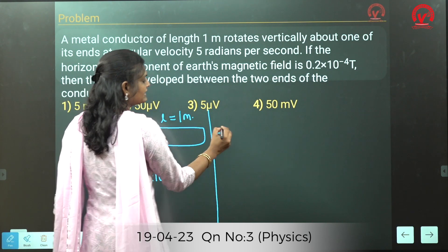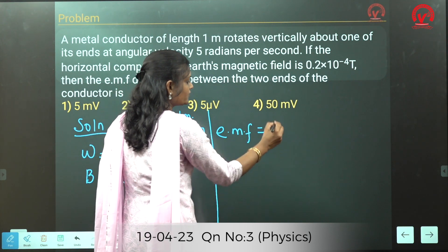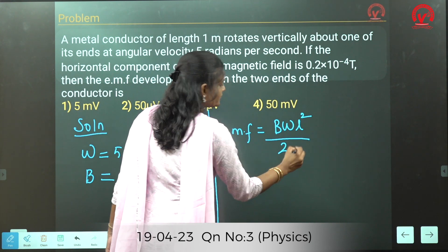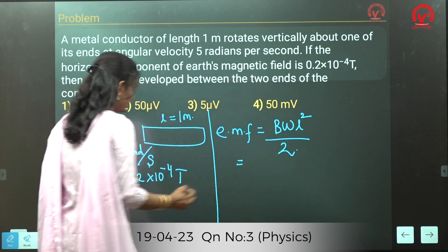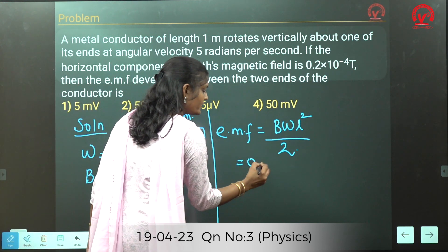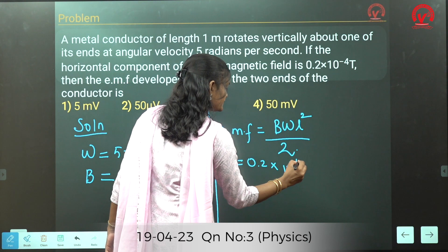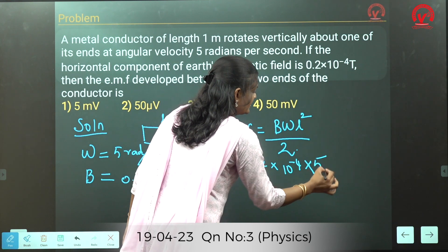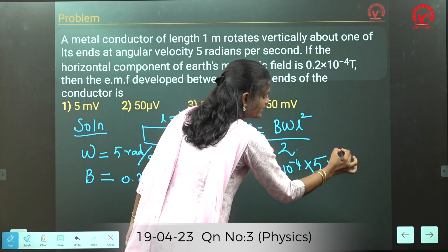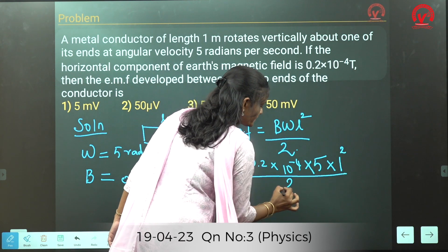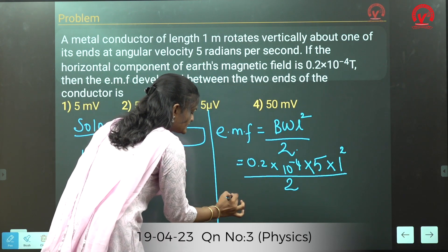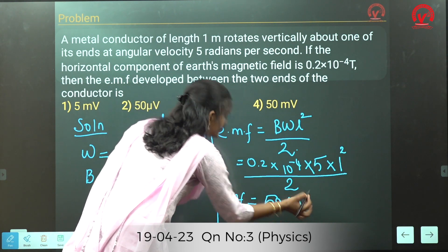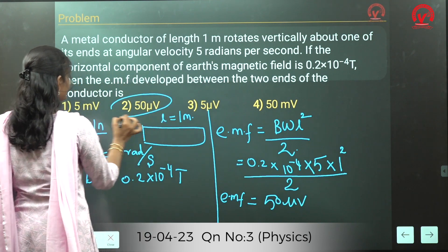The formula to find EMF is: EMF = (B × ω × l²) / 2. Substituting B = 0.2 × 10⁻⁴, ω = 5, and l = 1: EMF = (0.2 × 10⁻⁴ × 5 × 1²) / 2 = 50 microvolt. So the answer is 50 microvolt.